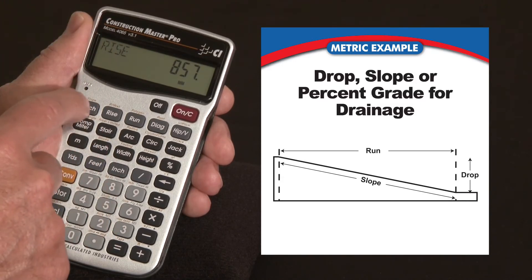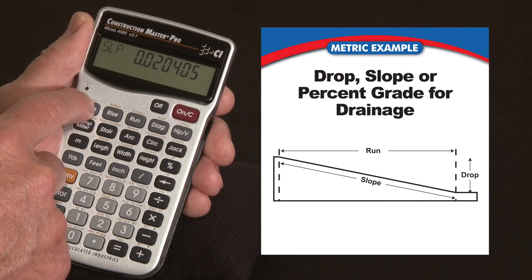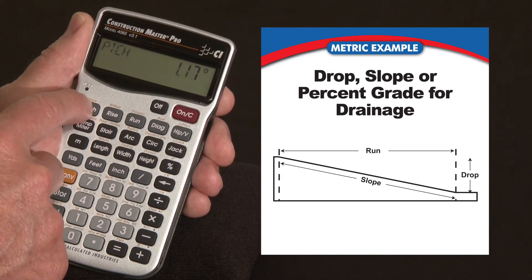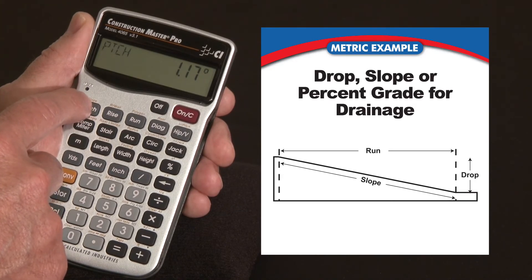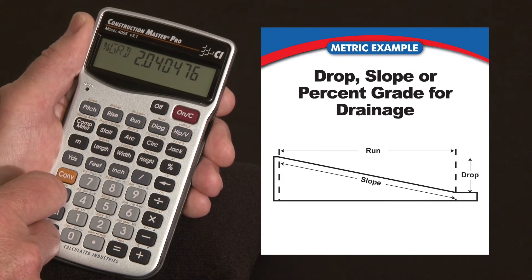And then I just hit the pitch key. Let me get one more press there. It's a 1.17 degree slope and it's about a 2 percent grade. And you think, well that's probably going to be sufficient.